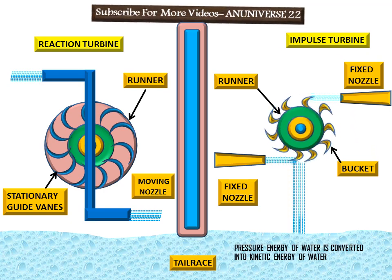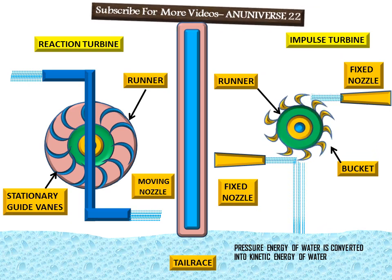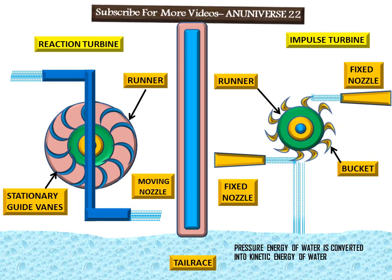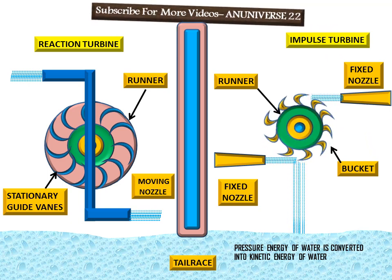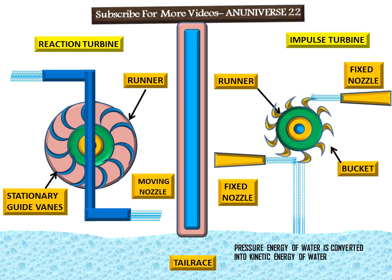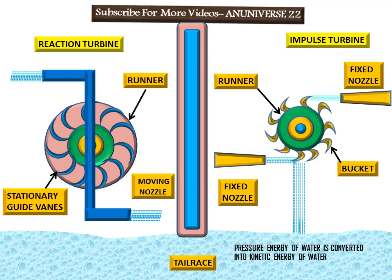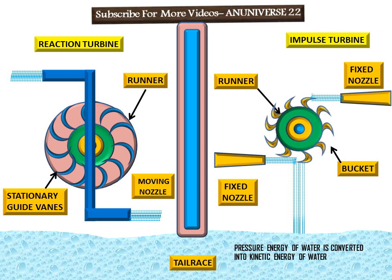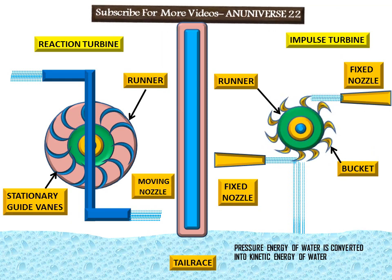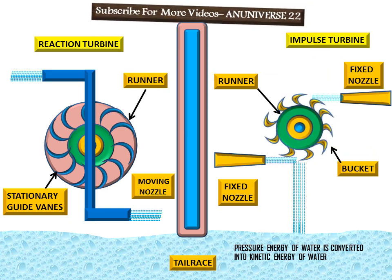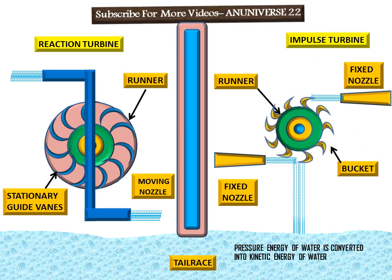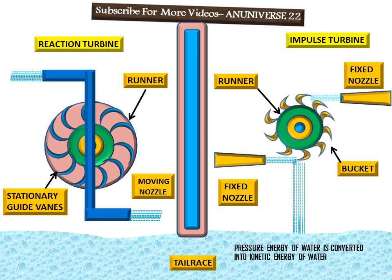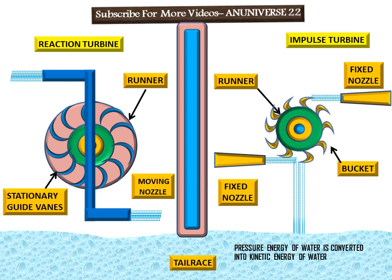In the impulse turbine, pressure energy of water is converted into kinetic energy. The potential energy or head is completely converted into kinetic energy by passing the water through the nozzle. The water jet comes out at higher velocity at atmospheric pressure, and the free jet strikes the buckets mounted on the runner, causing it to rotate and develop mechanical work.